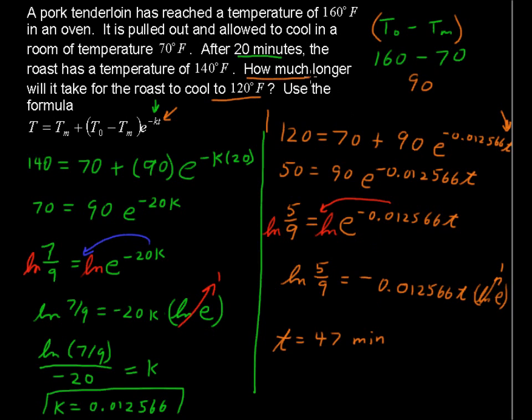Real quick here, it says how much longer will it take? So it was already out of the oven for 20 minutes. So let's subtract 20 minutes and say we'll need it to be out an additional 27 minutes. Look out for those trick problems if you're doing a multiple-choice test because they would have 47 minutes as one of the incorrect choices. We have to answer what's being asked. How much longer will it take? There's an example using Newton's law of cooling.